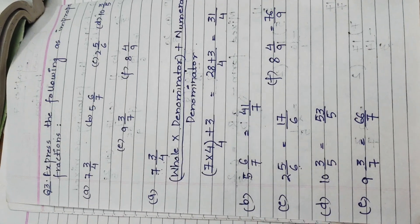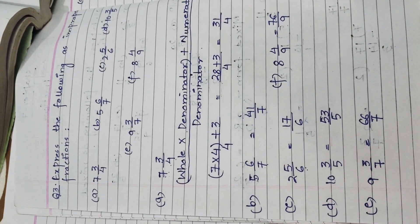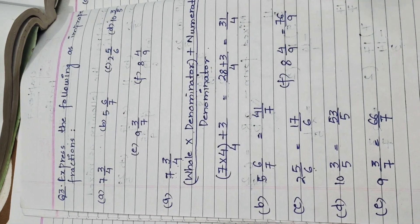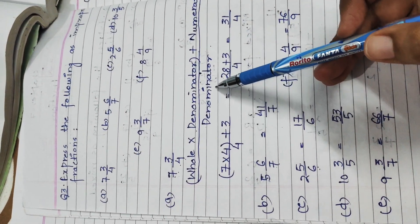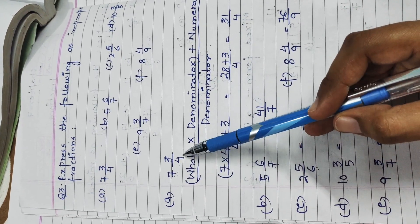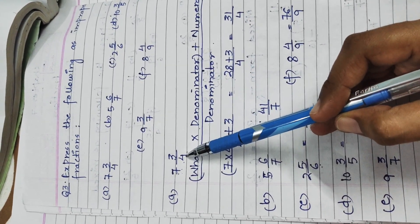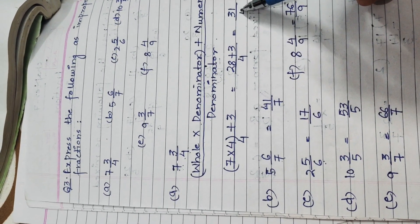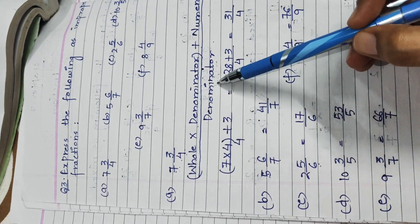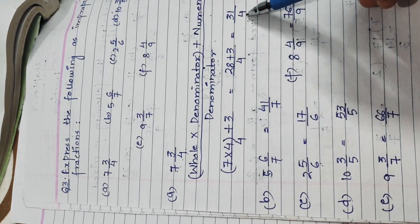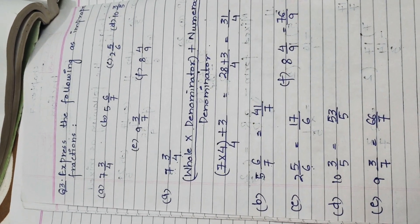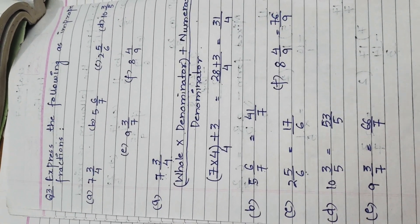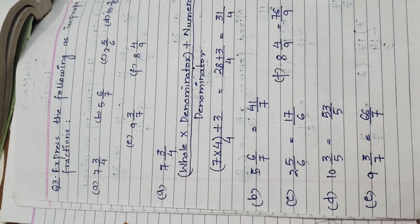I hope it is clear. Just to remind you: whenever we convert a mixed form into improper form, we multiply the whole by the denominator — 7 × 4 = 28 — then add the numerator: 28 + 3 = 31, giving numerator 31 divided by denominator 4. We apply the same process for all remaining parts. I hope the questions are clear. That's all for today, thank you.